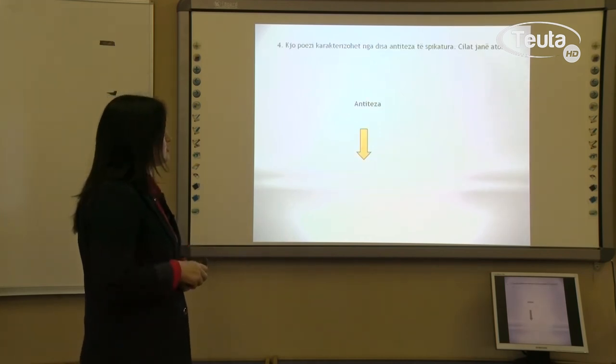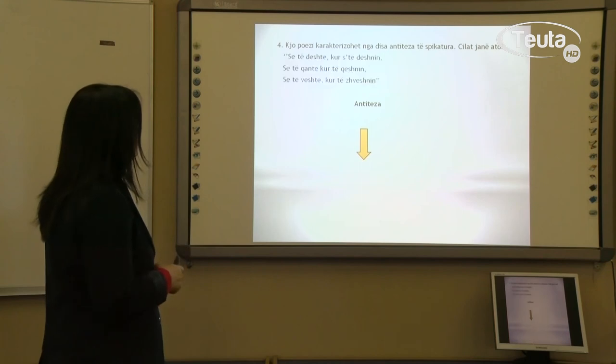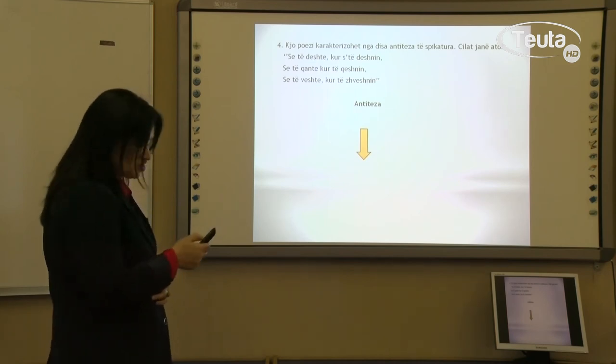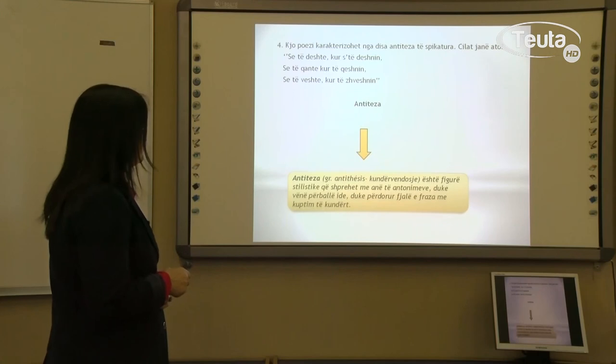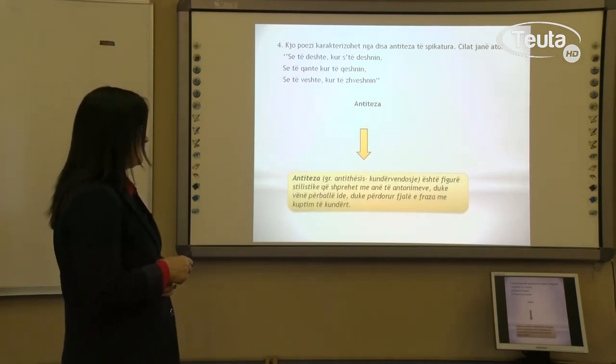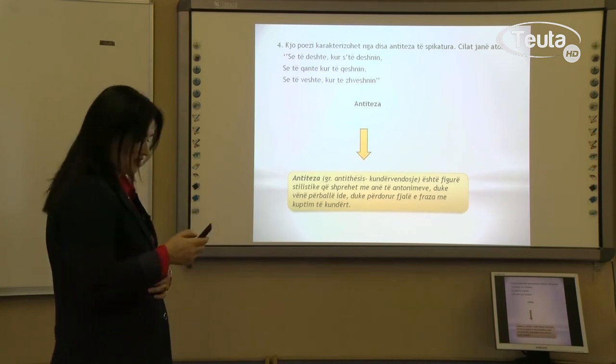Kjo poezi karakterizohet nga disa antiteza të spikatura. Cilat janë ato? Pra do të shohim se cilat janë antitezat: sa të deshte kur sa të deshnin, sa të qante kur të qeshnin, sa të vishte kur të zhvishnin. Dhe tani do të shohim se çka është antiteza. Antiteza është figurë stilistike që shprehet me anë të antonimeve, duke vënë përballë ide duke përdorur fjalë e fraza me kuptime të kundërta siç i vërtetëm në vargjit e lartë cënuar.